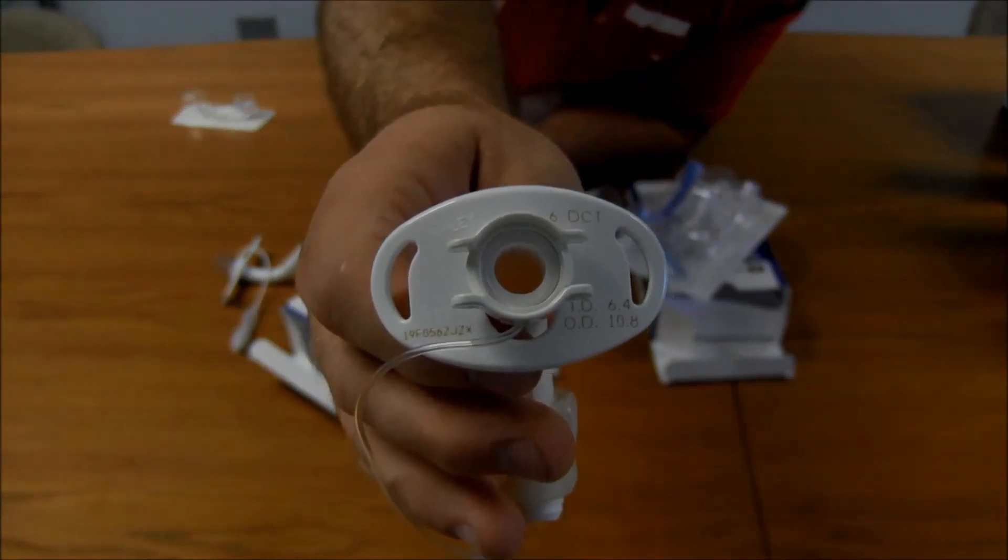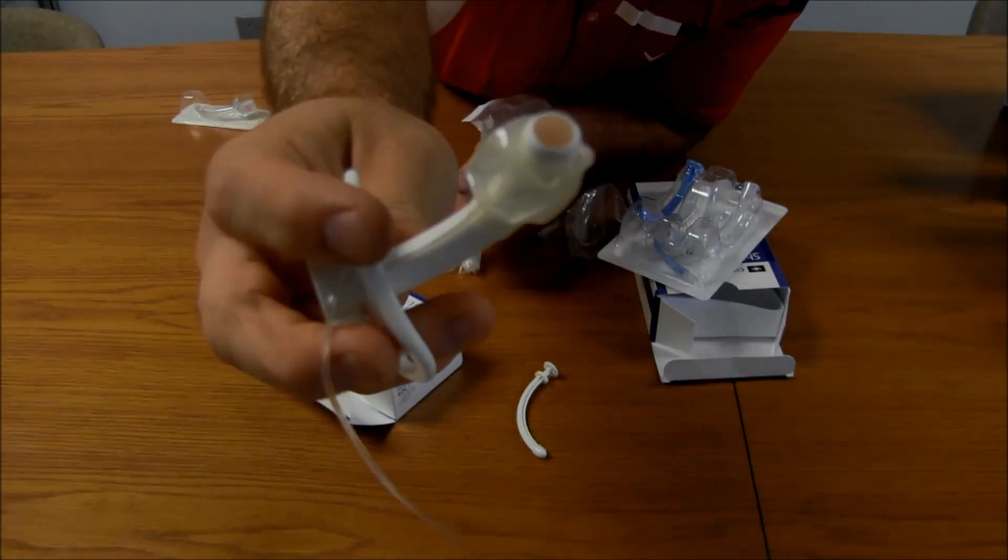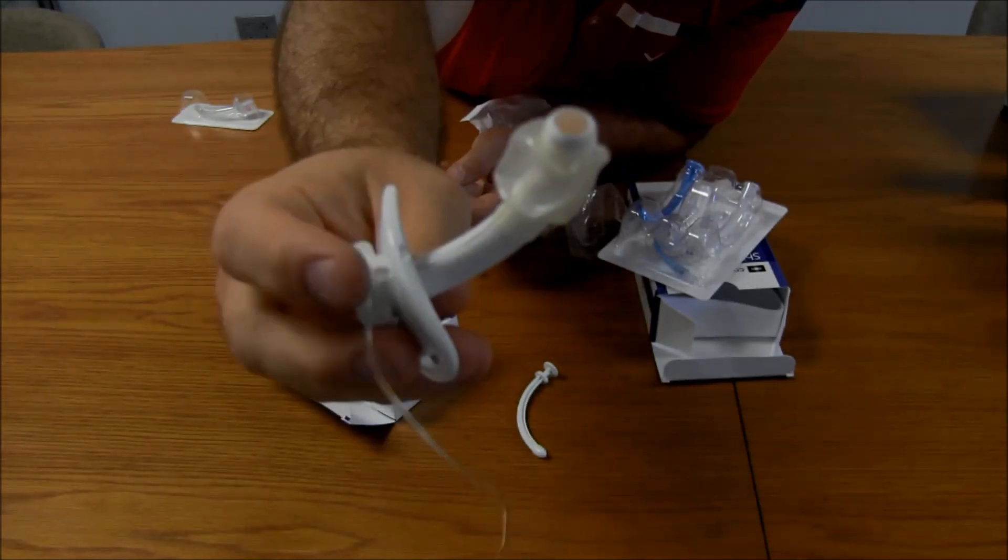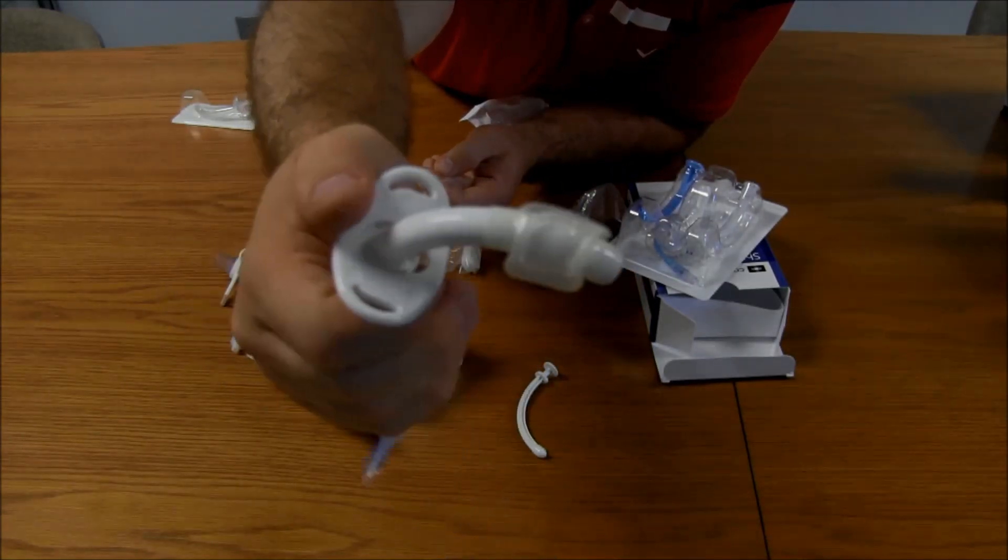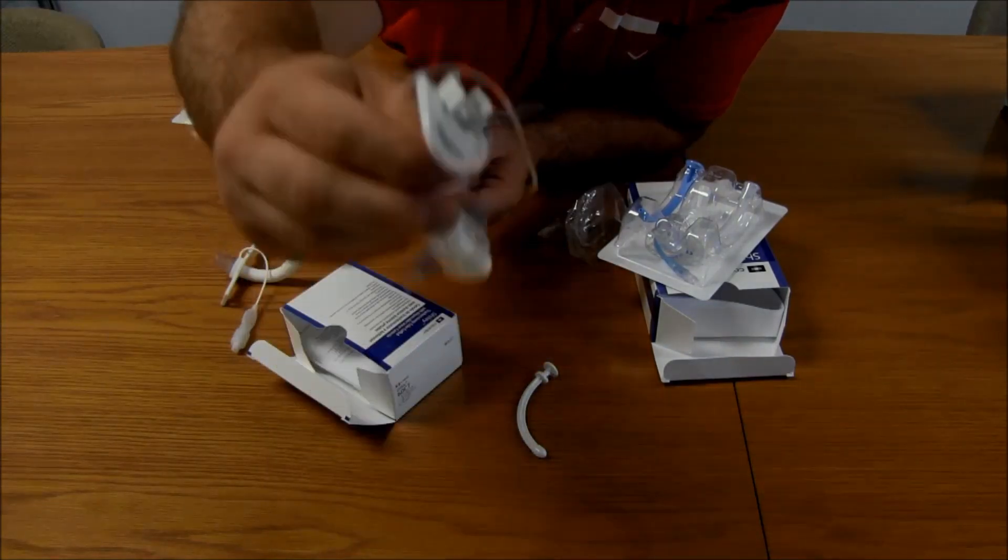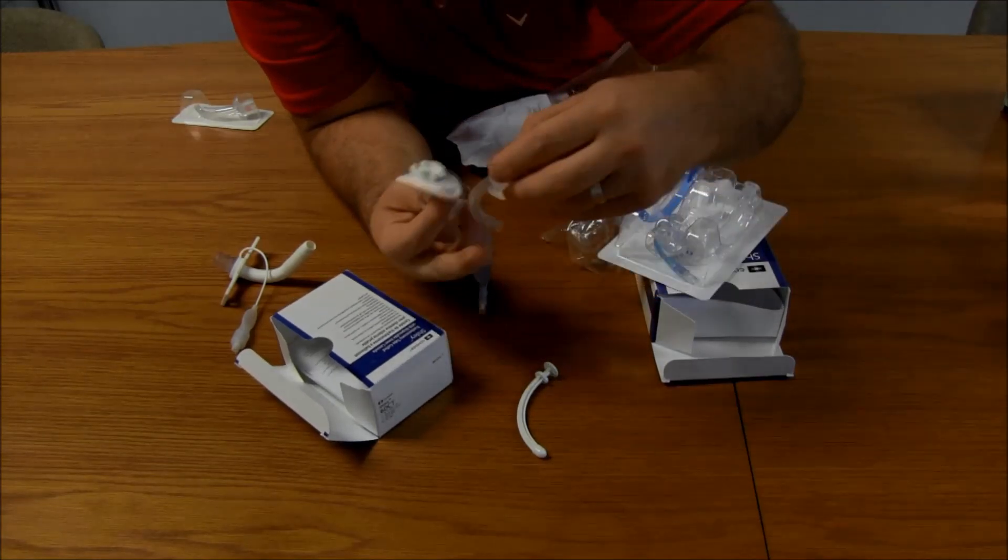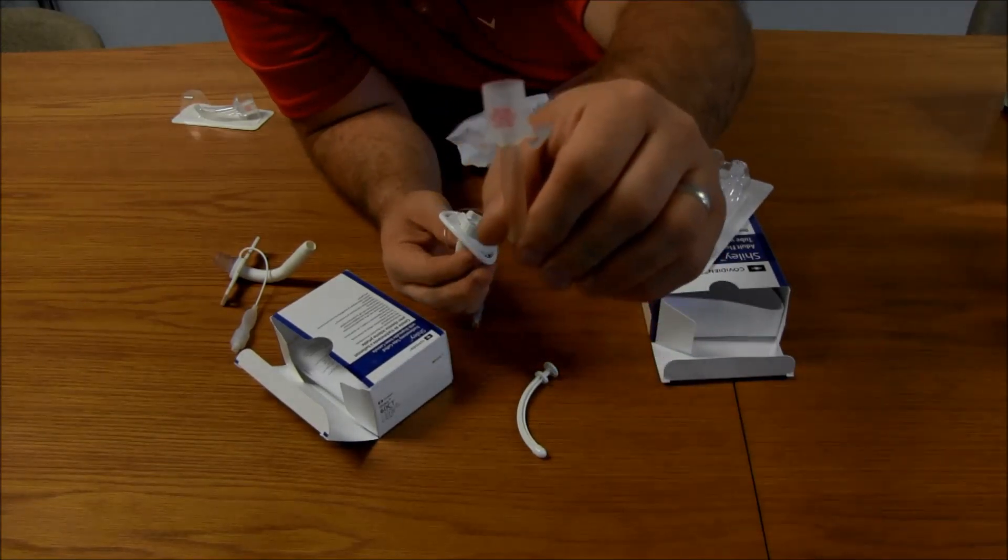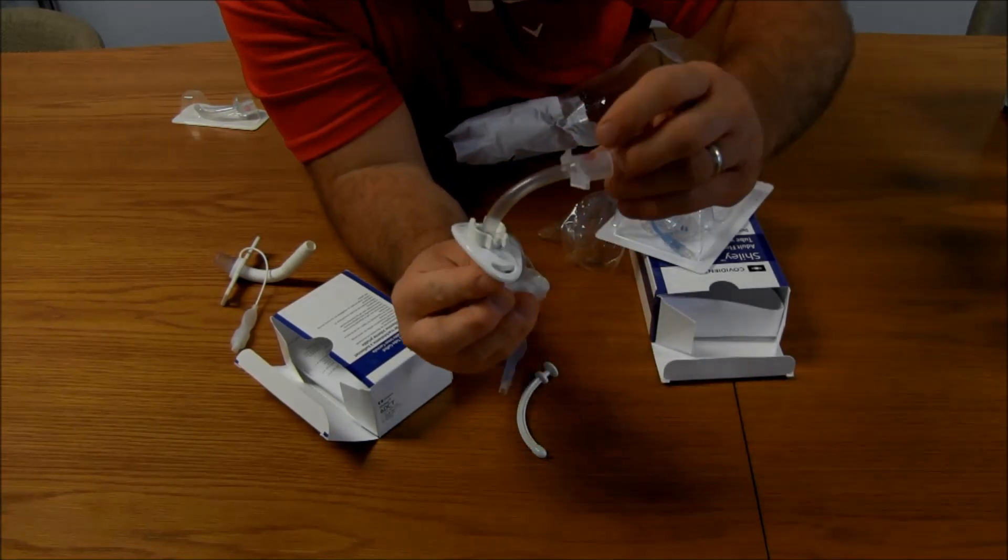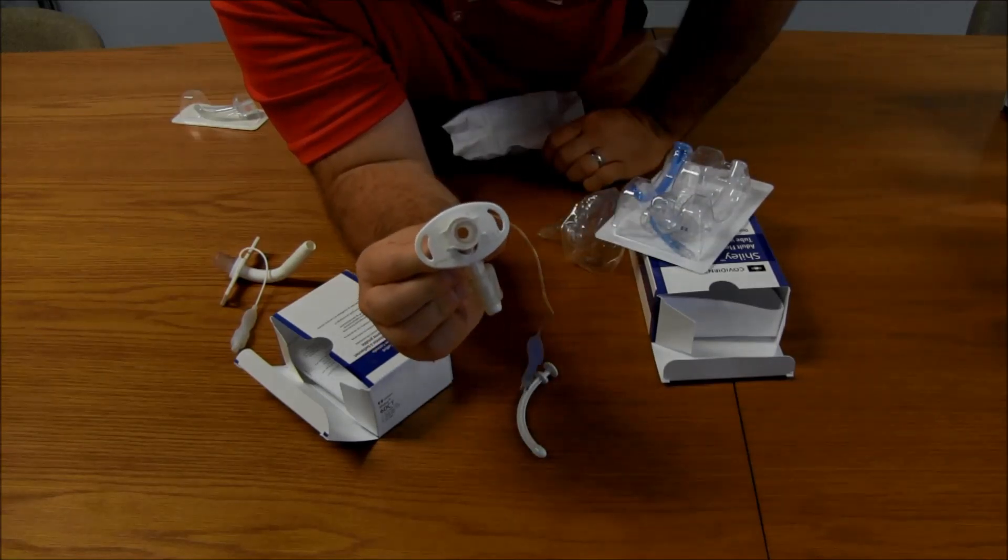And then on this side, we have one of those high volume, low pressure cuffs. So, high volume, low pressure decrease any kind of damage to the trachea. We do have an air cuff with that. And then also, we have the inner cannula. Now, notice the inner cannula with this. It has the clips on it. This is the one that clips in.